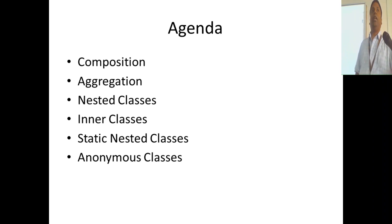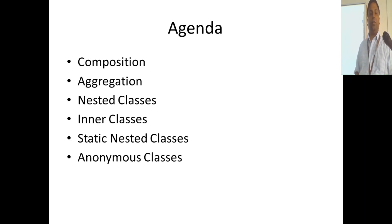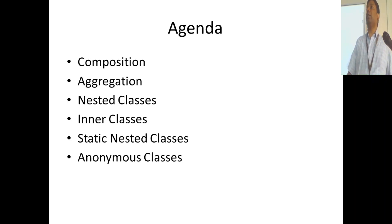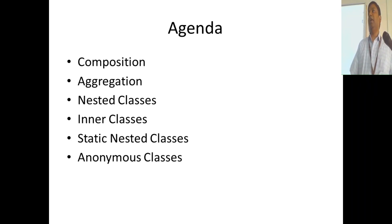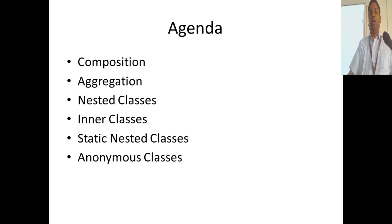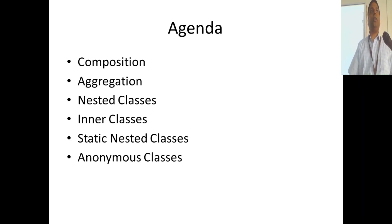Today we are going to talk about some very important concepts: the relationship between classes. We will discuss composition, aggregation, and nested classes. There are many types of nested classes — non-static nested classes are called inner classes, then static nested classes, and we will also see what an anonymous class is — a class without a name. We will be looking at all these things and sample pieces of code.